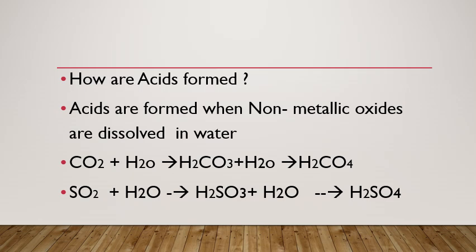Let us see how acids are formed. Acids are formed when non-metallic oxides are dissolved in water. Non-metallic oxides — metals are substances like copper, iron, silver, gold, etc. The elements which are not metals come under the category of non-metals. For example, carbon, sulfur, phosphorus, and nitrogen are all non-metals.